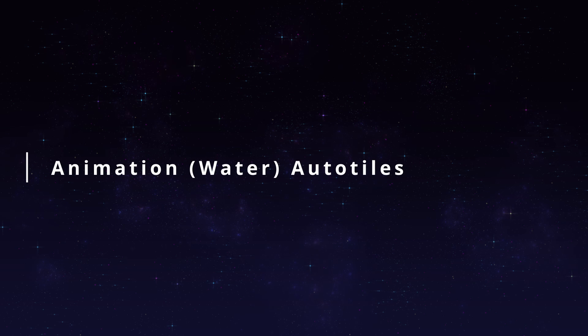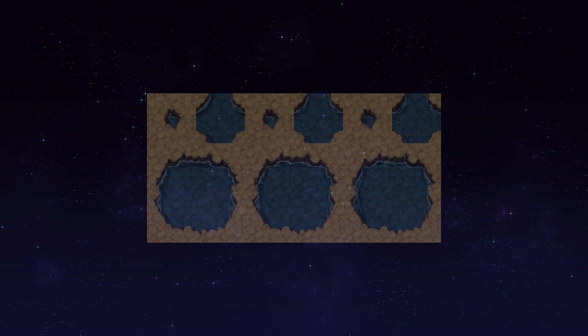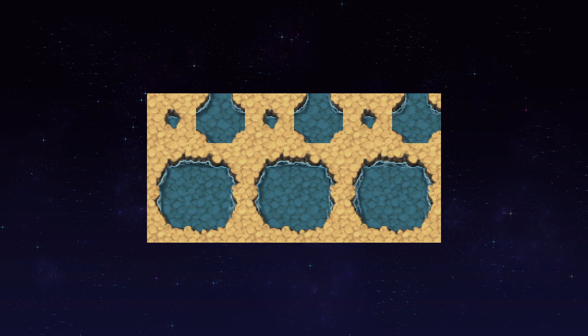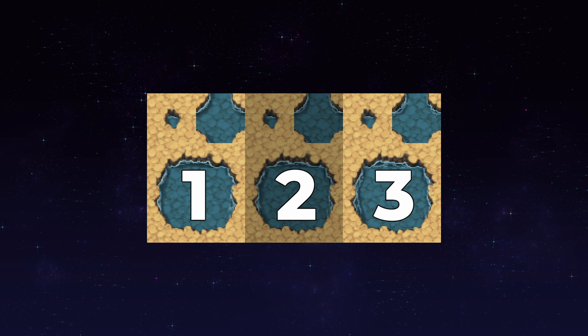Now let's look at the other auto tiles. Next up: water tiles. Water tiles are basically the ground tiles but animated. They have three frames and rotate through them — one, two, three, two, one — so they go up and back down.